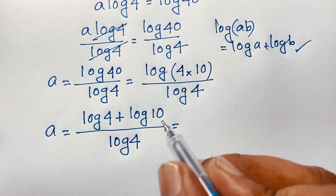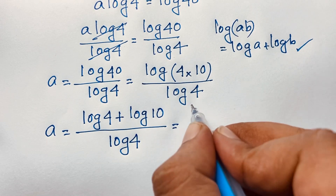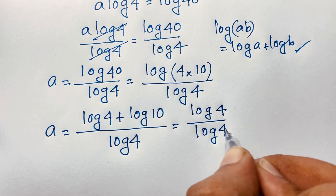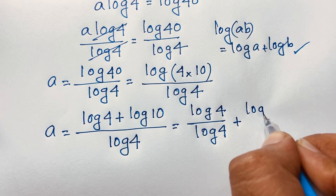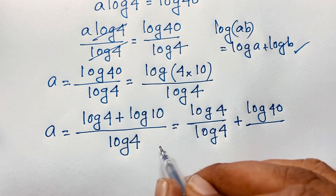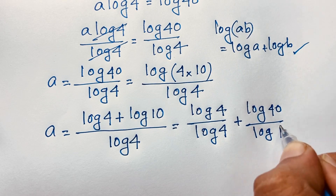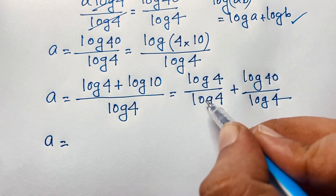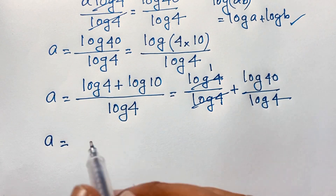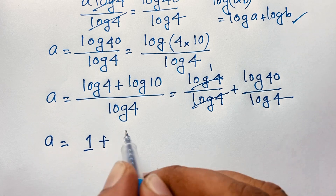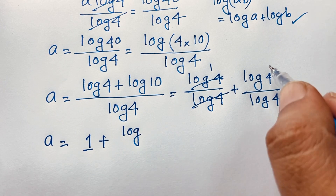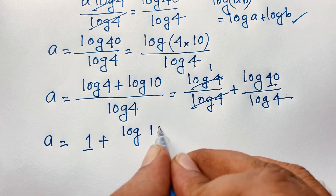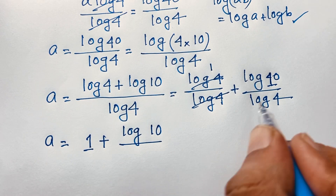Now I separate this fraction. So it will be log 4 divided by log 4 plus log 10 divided by log 4. You can see easily log 4 over log 4 cancels out to give 1. So A equals 1 plus log 10 over log 4.